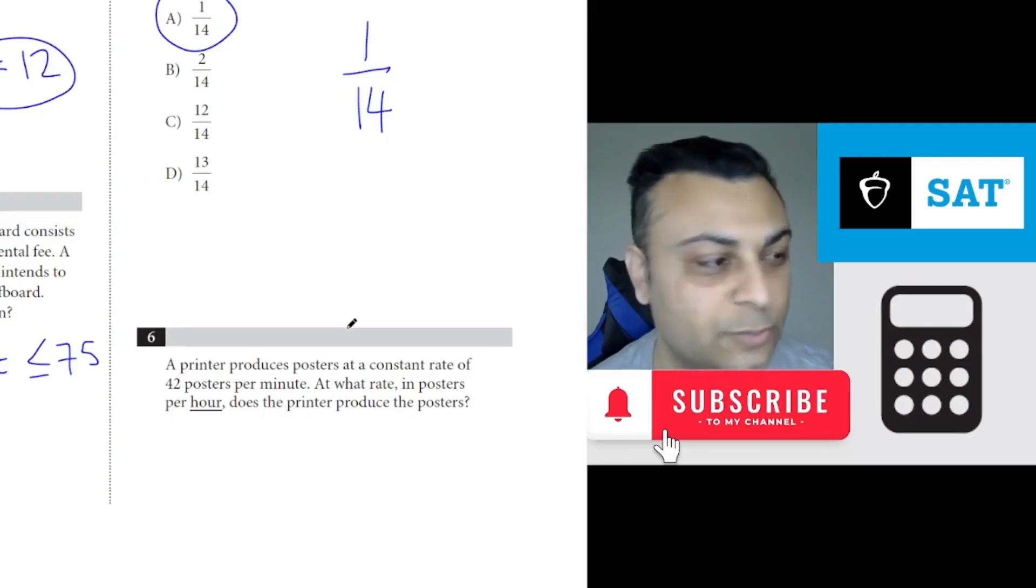Number six: A printer produces posters at a constant rate of 42 posters per minute. At what rate in posters per hour does the printer produce the posters? You could just do 42 times 60, and that is the answer.